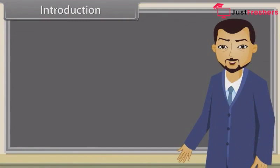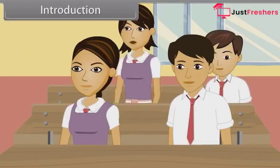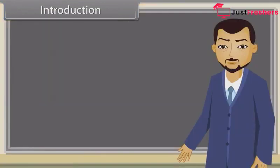There are four types of animal tissues. Sir, are the organs in human body also made of tissues? Yes, Naina. In this lesson, you will learn animal tissues and the organs.